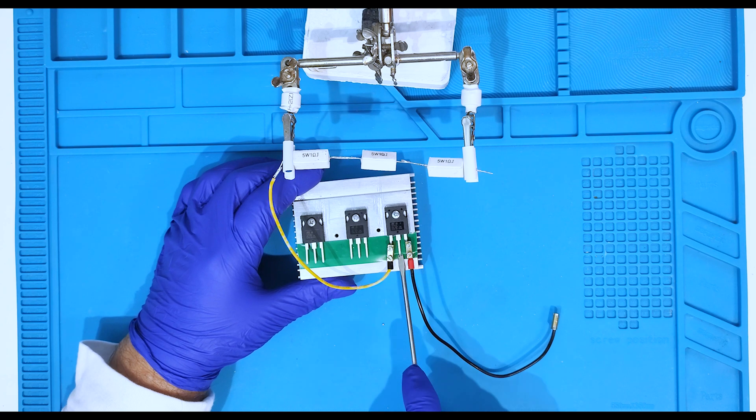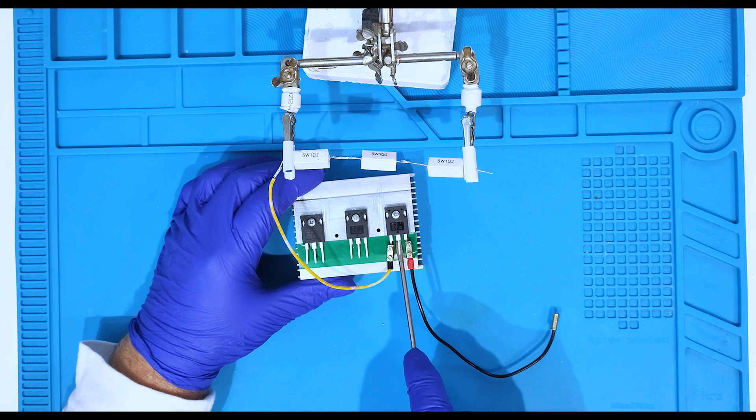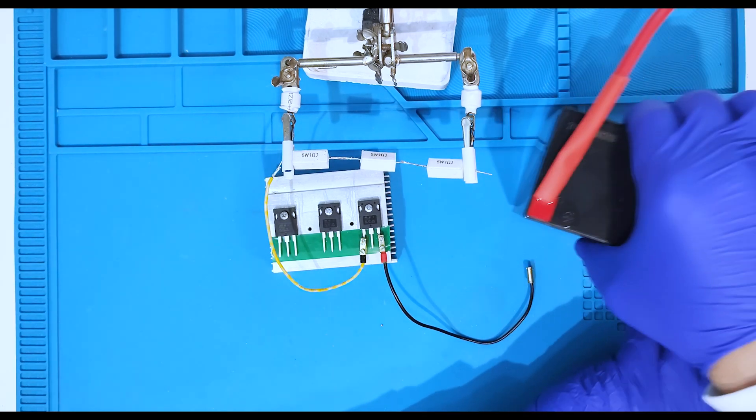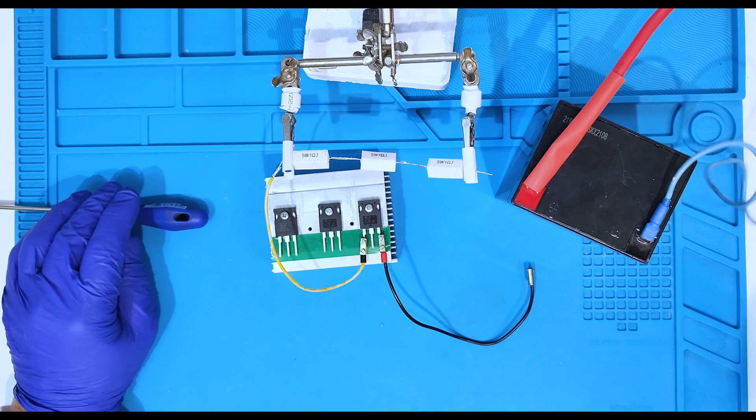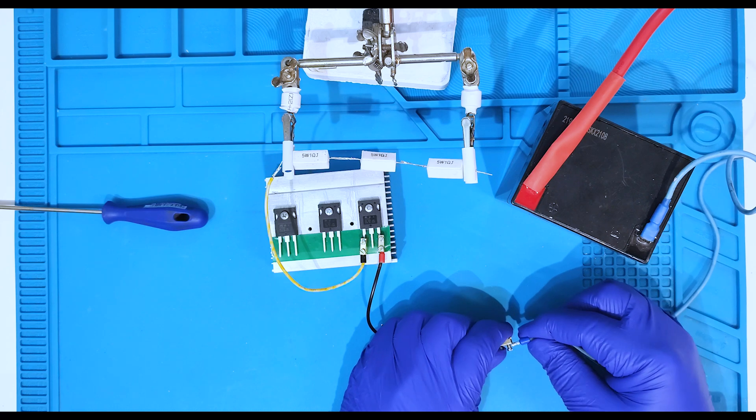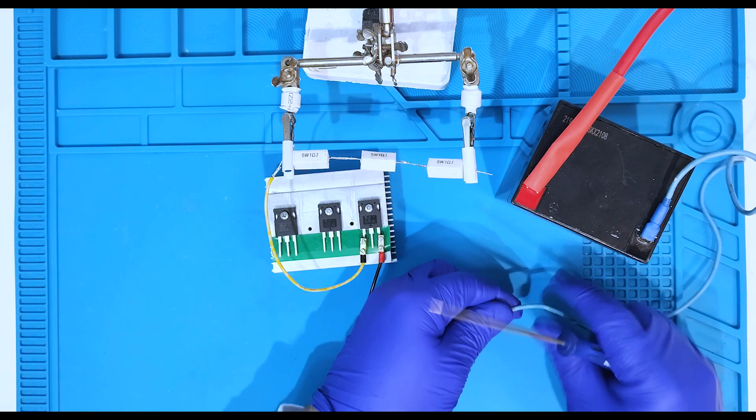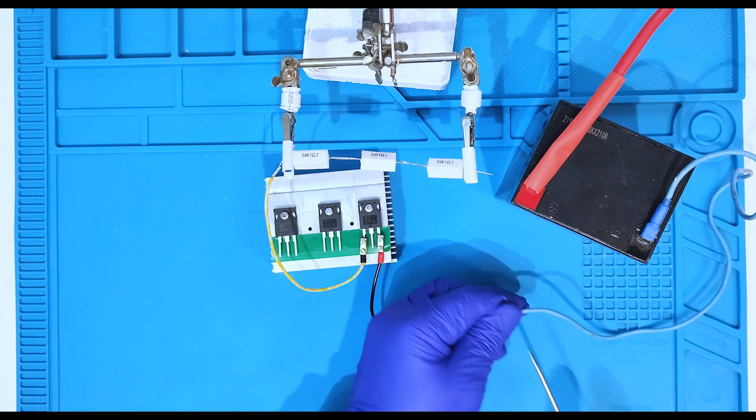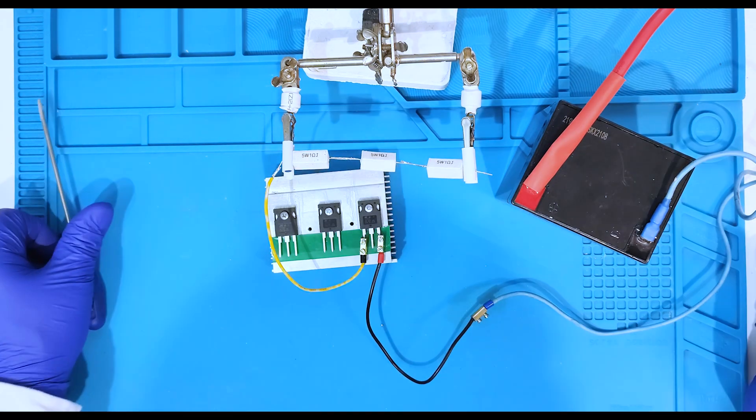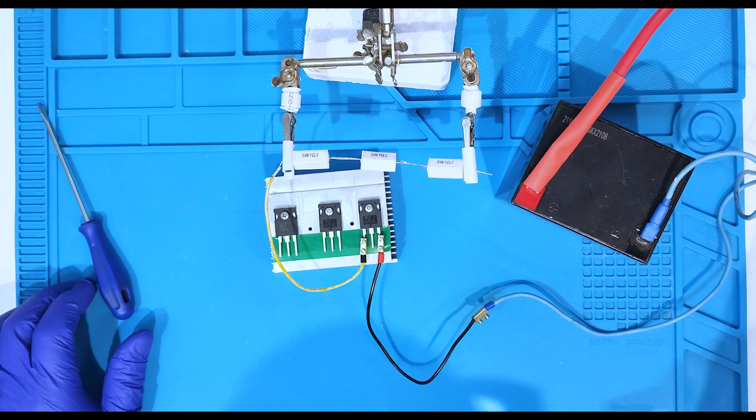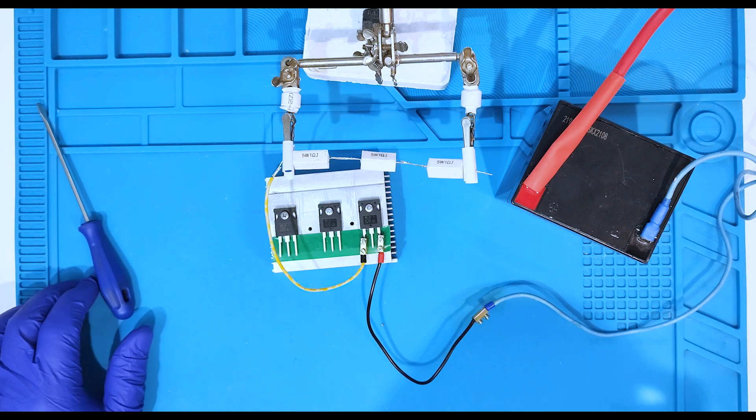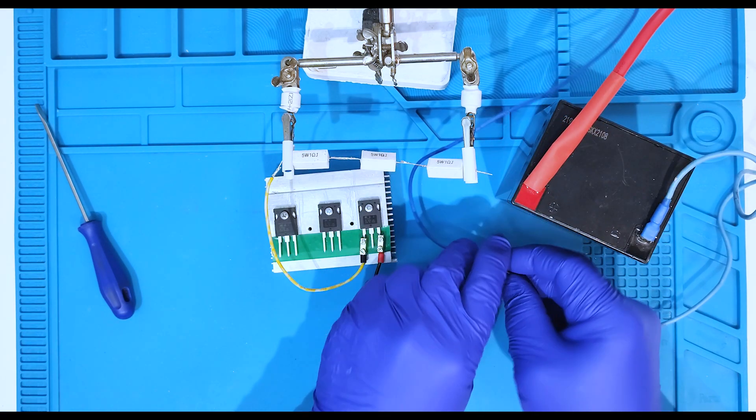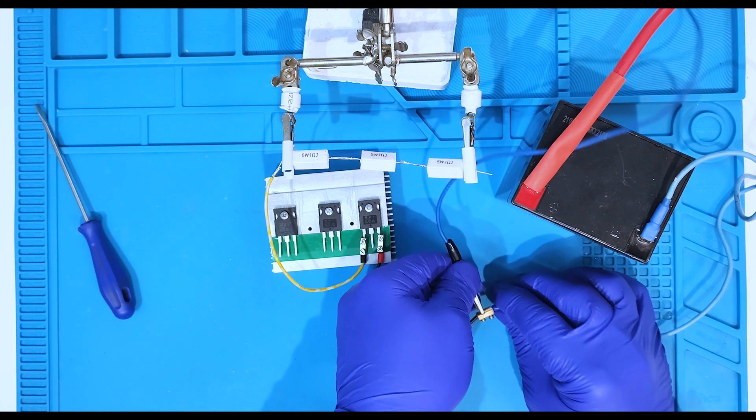To be able to get high current we are gonna use the battery. Here we have the point to unite ground from both of our supplies in our circuit.